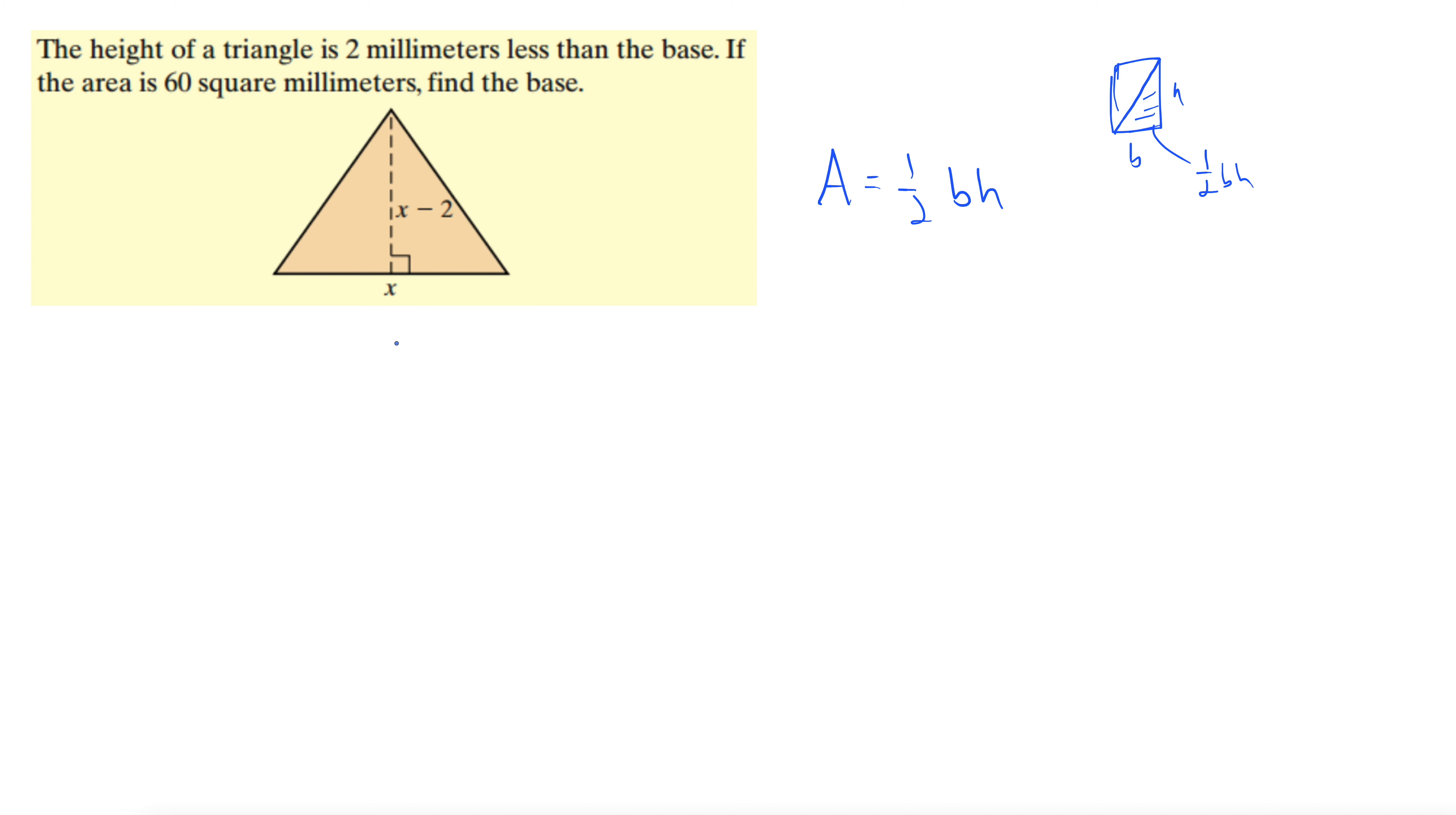Okay, so this here is our base, and this up here is our height. The area is given, this is 60 square millimeters, so area equals one-half base times height. So we have 60 equals one-half base, which is x, times height, x minus 2.